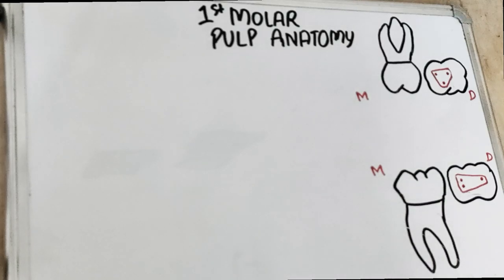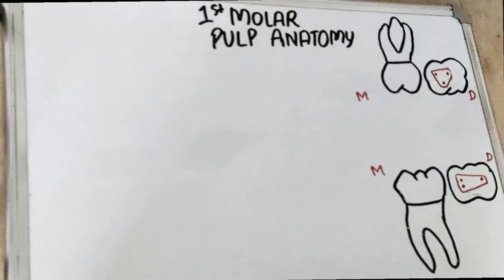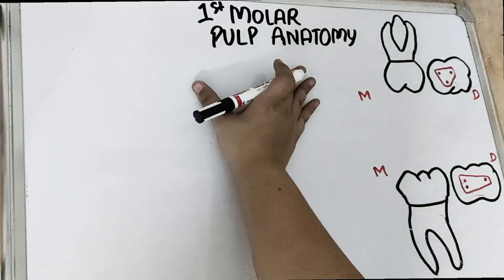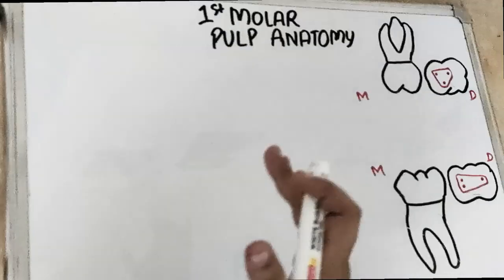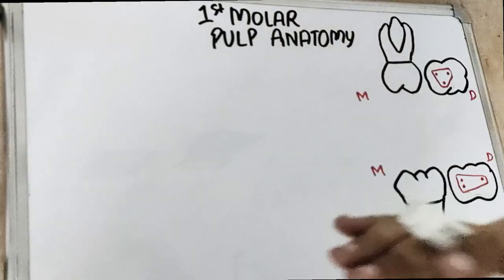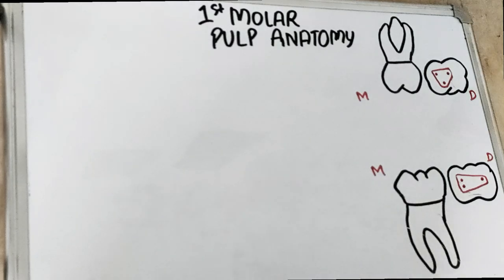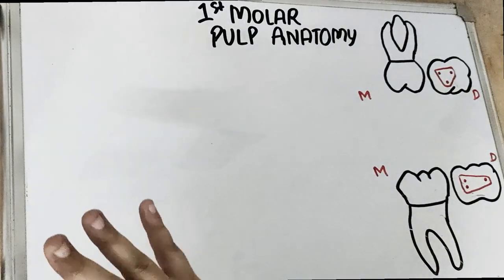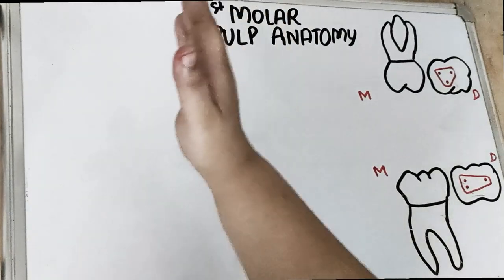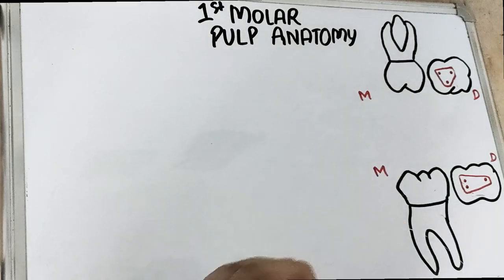Welcome back to another Express video lecture. Today's video we are going to talk about the pulp anatomy of the first molar. This is the most frequently asked question for the NEET exam and for viva, because first molar anatomy is so important for maxillary as well as for mandibular teeth.